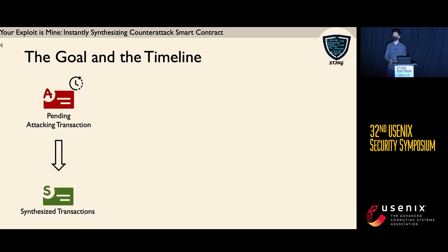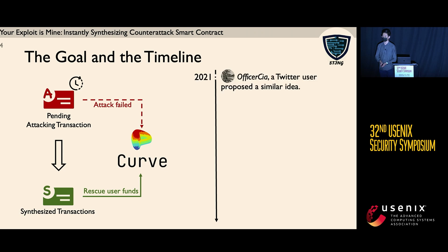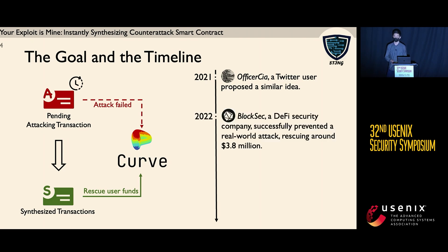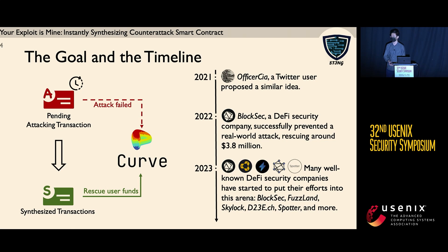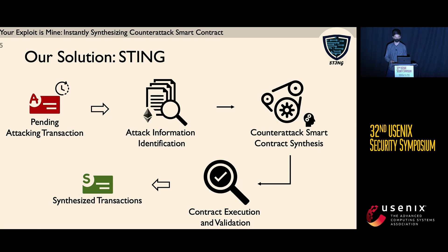Given a pending attacking transaction, counter-attack tries to synthesize one or more transactions that will mimic the original attack but will direct the profit to ourselves. It is not a new concept. Back in 2021, a Twitter user proposed a similar idea. One year after, BlockSec, a well-known blockchain security company, successfully prevented a real-world attack risking around 3.8 million USD. In 2023, many well-known security companies are trying to develop such a protection mechanism, but the underlying technique remains unknown to the public. Here we present our solution, named Stim. The overall process is split into three phases: attack information identification, counter-attack synthesis, and execution and validation.